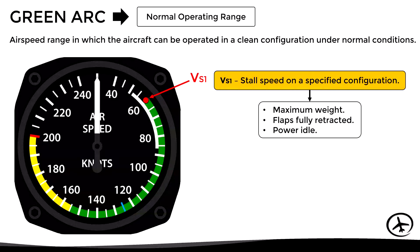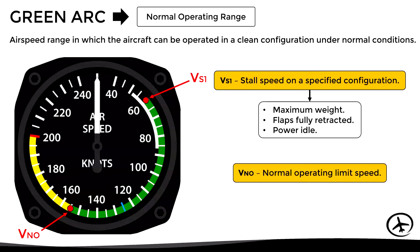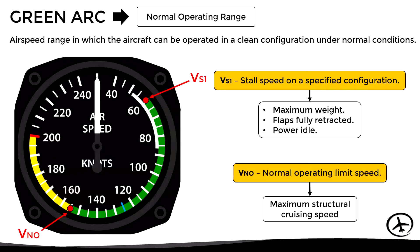The speed at which the green arc ends is the VNO — the maximum normal operating speed, also sometimes referred to as the maximum structural cruising speed. This is the maximum speed at which the aircraft should fly under normal conditions. If the aircraft flies above VNO it will have more limited tolerances in terms of structural integrity, meaning the pilot must exercise extra caution to remain within the structural limits of the aircraft.